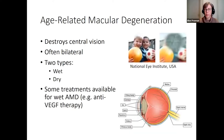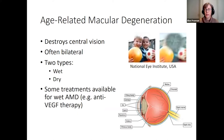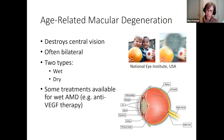Age-related macular degeneration (AMD) destroys central vision. Someone with severe AMD would have a blind spot right where they are fixating. It is typically a bilateral disease with two types — wet and dry — both of which cause central vision loss in their advanced stages. Some treatments are available for wet AMD. AMD affects the macula, which is part of the retina at the back of the eye.